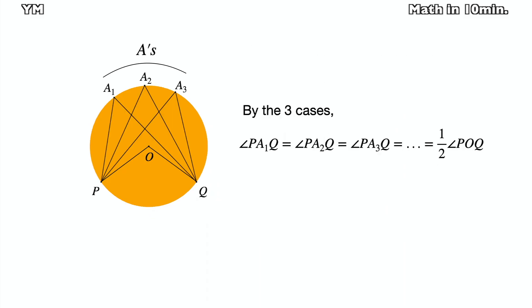By all three cases, the inscribed angles subtended by the same arc are equal to half of the center angle.